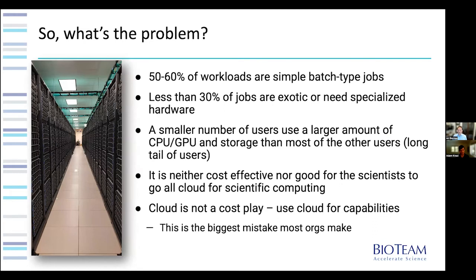If 50 to 60 percent of workloads are simple batch jobs and less than 30 percent need specialized hardware, what does that mean? It turns out a smaller number of users require specialized hardware, and they use up most of the GPU, CPU, and storage — there's a high short burst of users doing the big stuff, and a long tail of users who don't use as much. It turns out it's neither cost-effective nor good for the scientist to go all-cloud for scientific computing. As Chris Dag put it: the cloud should never be used as a cosplay — it should be used as a capability play.